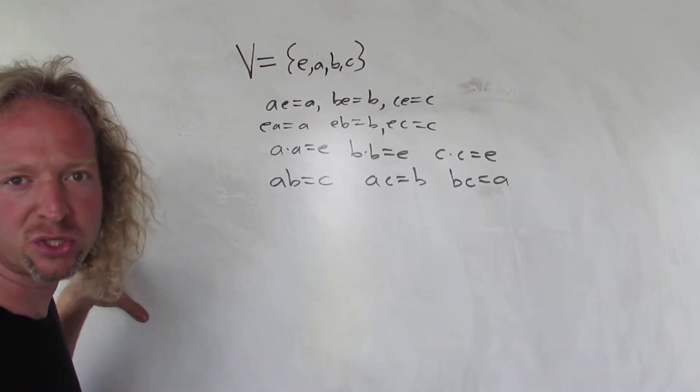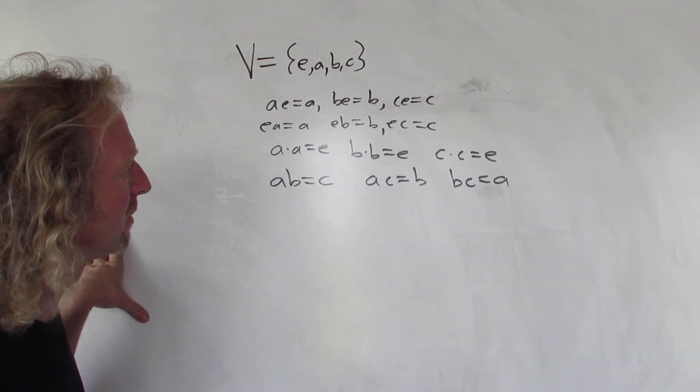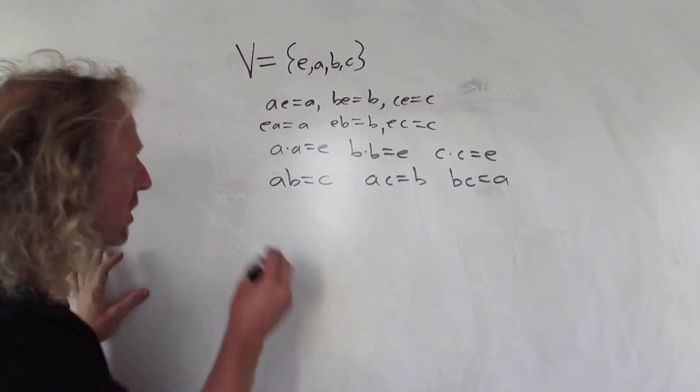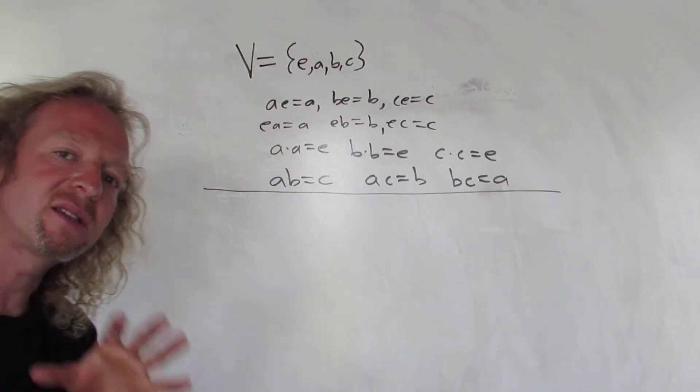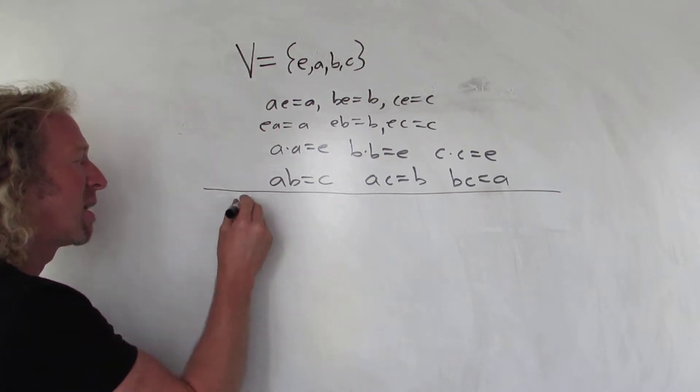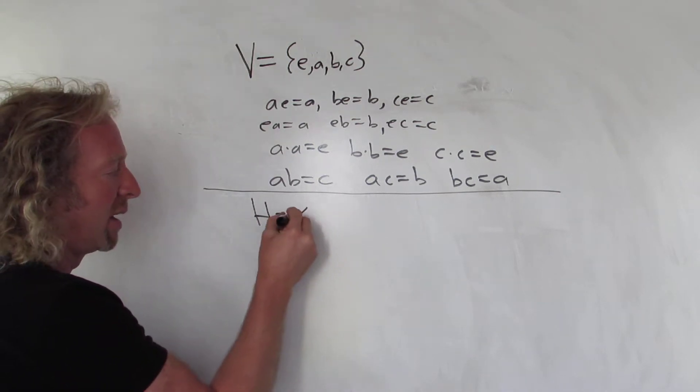So in this video we're going to look at cosets. Now you know how the multiplication works, let's take a simple example. Let's take a cyclic subgroup. Let's take the subgroup, which we'll call H, generated by the element A.